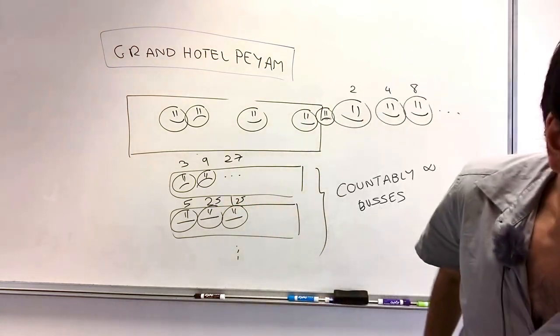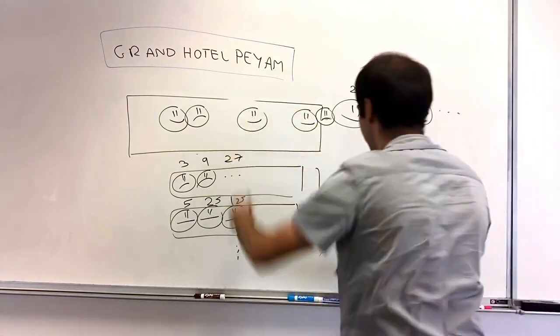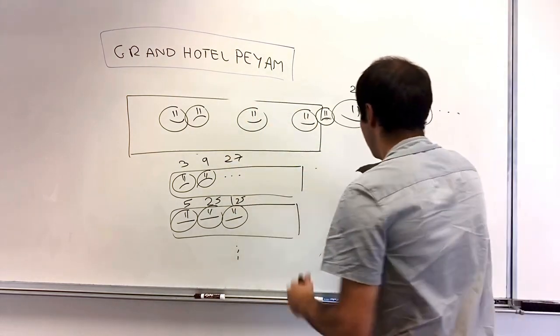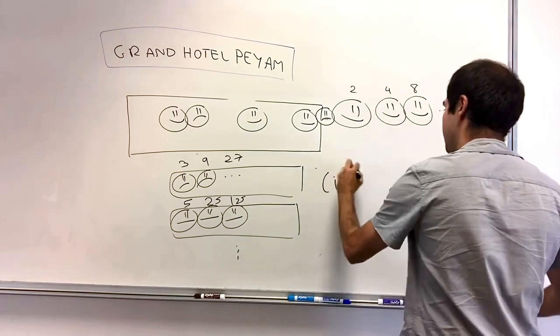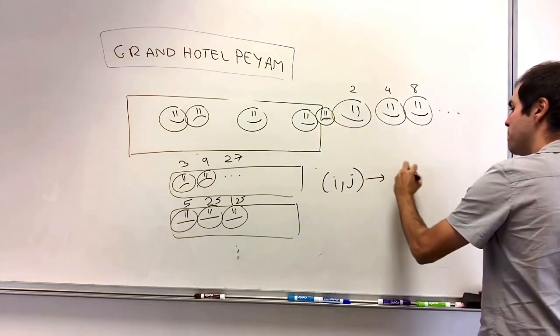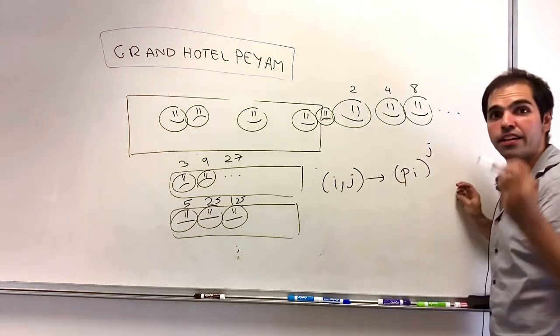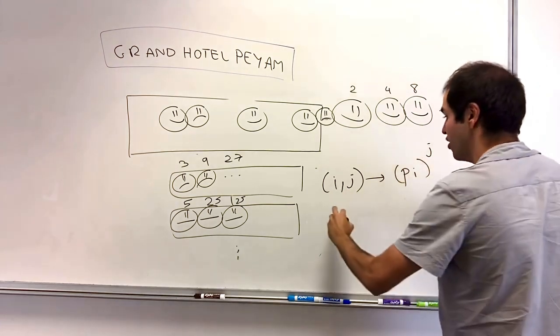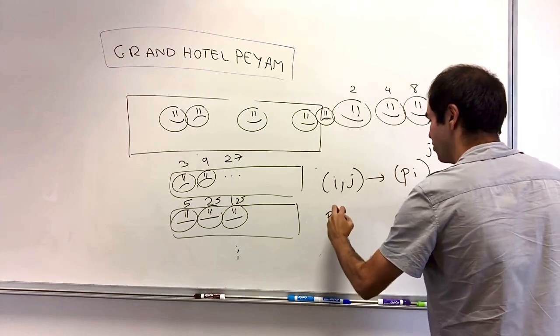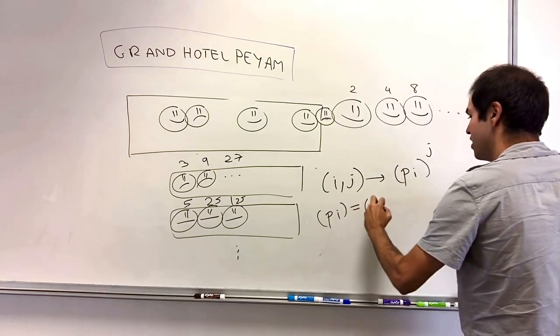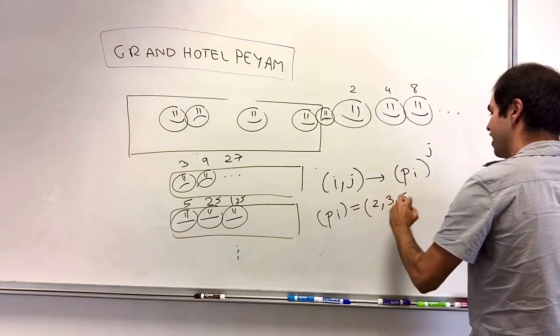So in other words, the ijth member here, ijth member, put them in room pi to the j, where pi is just an enumeration of prime numbers. So pi, the sequence pi is two, three, five, seven.